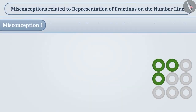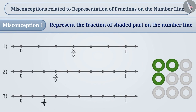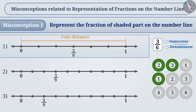Misconception 1: Represent the fraction of the shaded part on the number line. Most of the times, the fraction of the shaded part is identified incorrectly. As the 3 parts in the given figure are shaded, the numerator is taken as 3 and the remaining 6 parts is taken as the denominator, and the fraction is represented as 3 by 6. To represent this on the number line, a unit distance is divided into 6 parts and out of these, 3 parts are taken to express the fraction. This is a misconception.